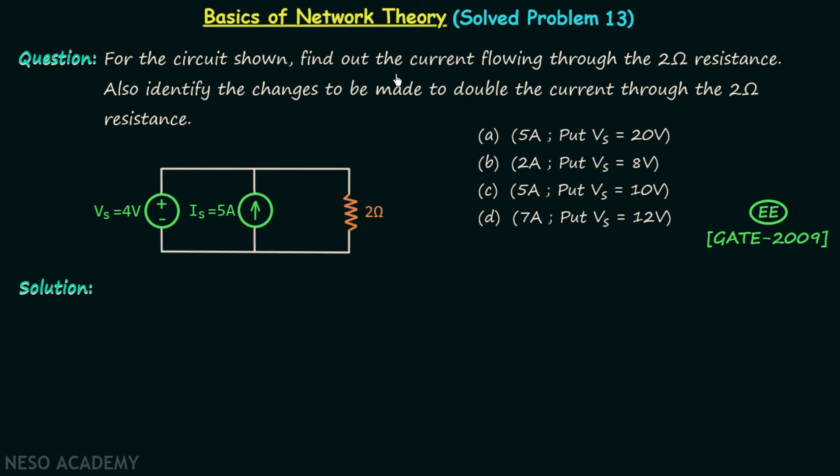For the circuit shown, find out the current flowing through the 2 ohm resistance. Also identify the changes to be made to double the current through the 2 ohm resistance.